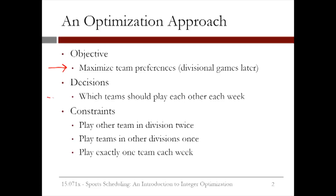Our objective is to maximize team preferences, which are that teams would like to play divisional games later. Our decisions are which teams should play each other each week. And we have three types of constraints: each team needs to play the other team in their division twice, each team needs to play the teams in the other division once, and each team should play exactly one team each week.